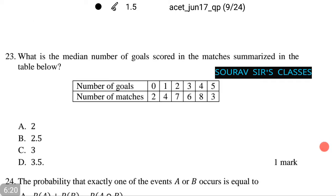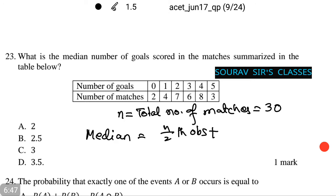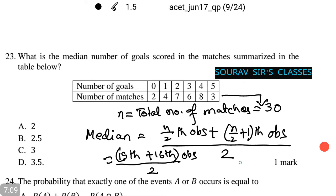Moving on to the next question. What is the median number of goals scored in the match summarized in the table below? Observe the table. Now, we see n, which is equal to total number of matches, equals 30, which is even. Now, we know that median is nothing but n by 2th observation plus n by 2 plus 1th observation whole divided by 2, which in this case will be the 15th and the 16th observation, which equals 3 plus 3 whole divided by 2 equals 3. I did the sum over here so that you can correlate with the answers given along. That is, option number C is the correct answer.